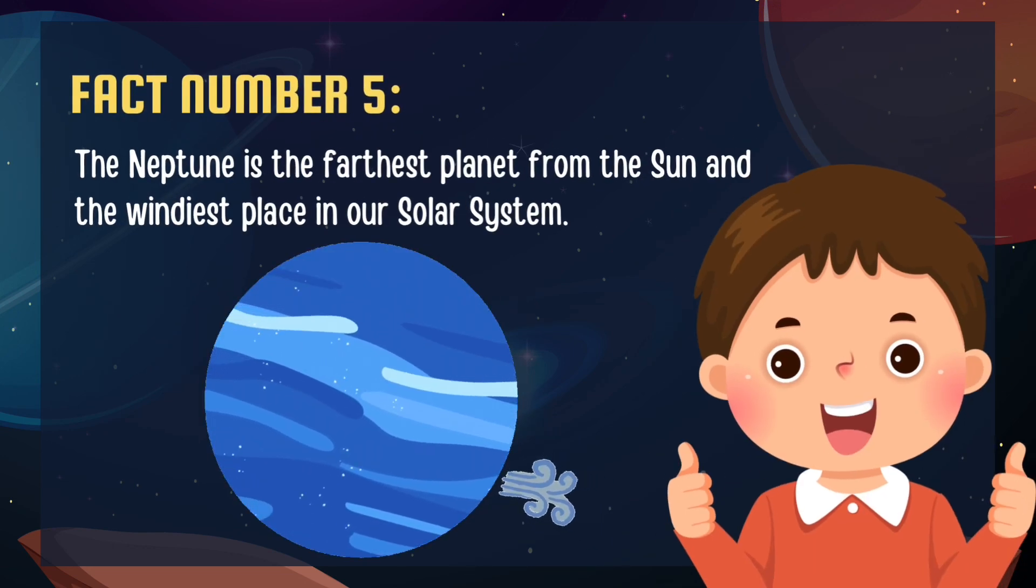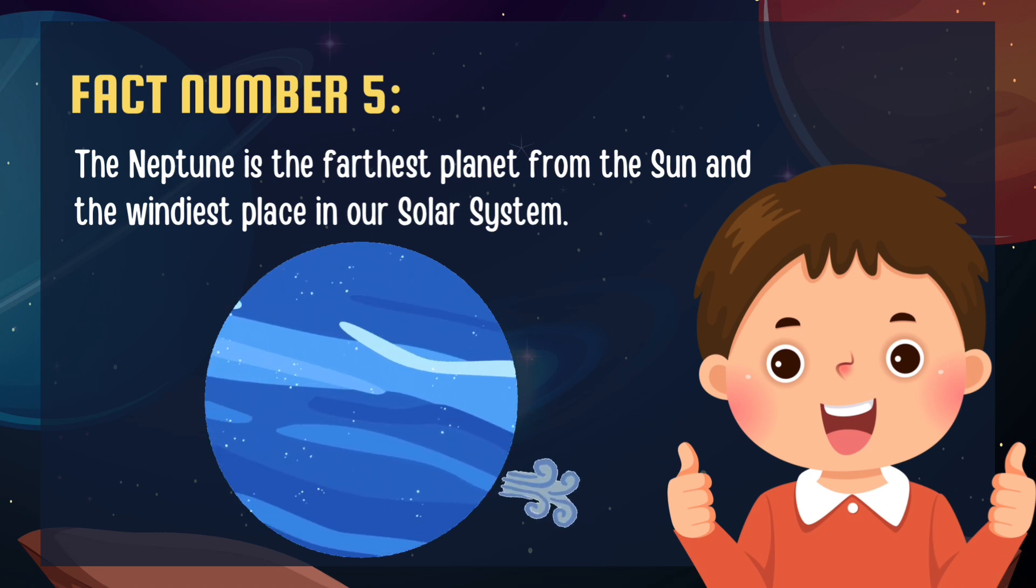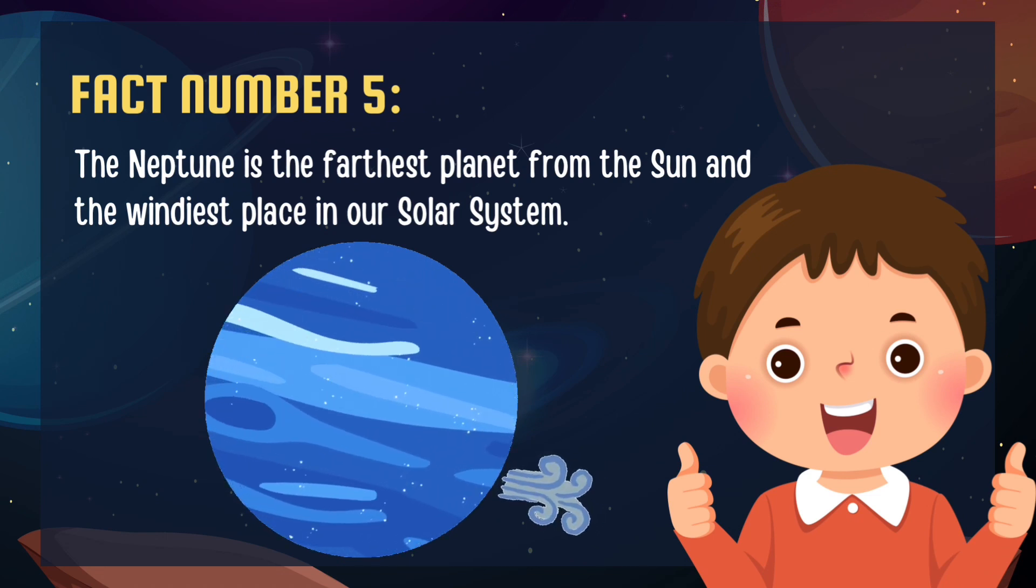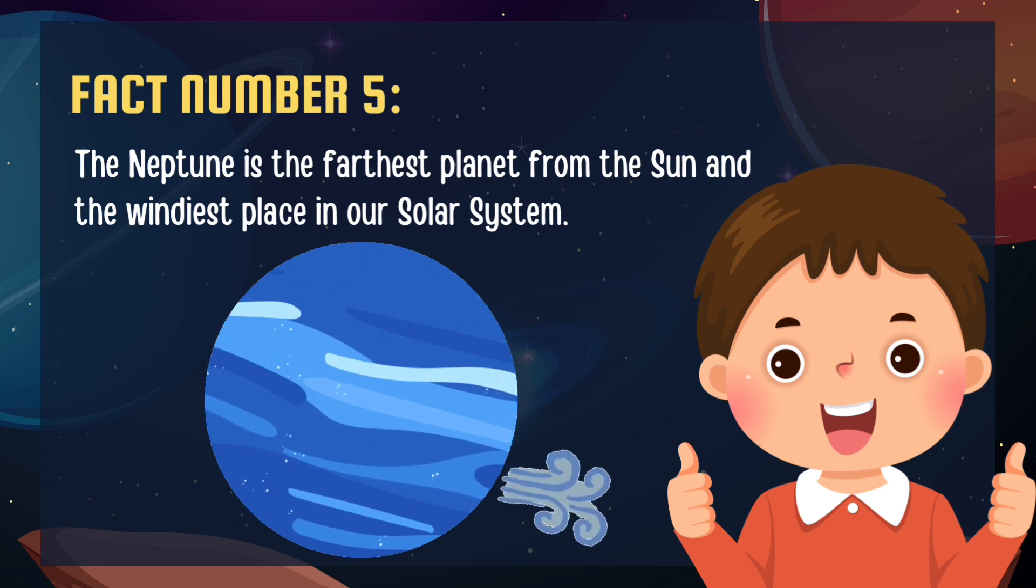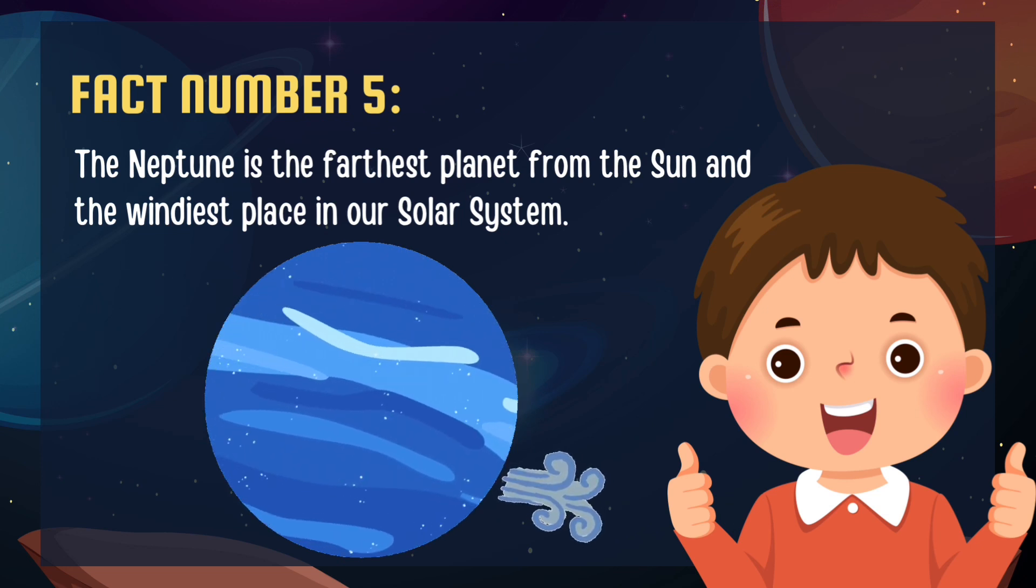Number 5 dives deep into Neptune. It's the farthest planet from the sun and the windiest place in our solar system. Neptune's winds can reach an astonishing 1,200 miles per hour.